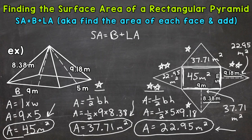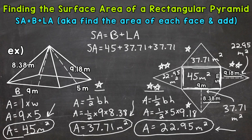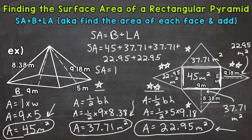Now it's time to add everything up to calculate the total surface area. Surface area equals the area of the base, 45, plus the top and bottom lateral faces: 37.71 plus 37.71, plus the left and right lateral faces: 22.95 plus 22.95. You can see we added five numbers together — five areas representing our five faces.